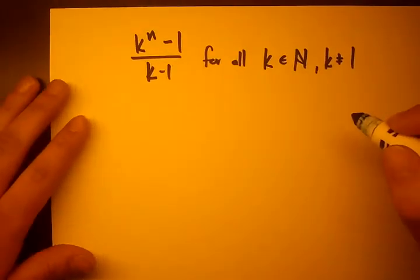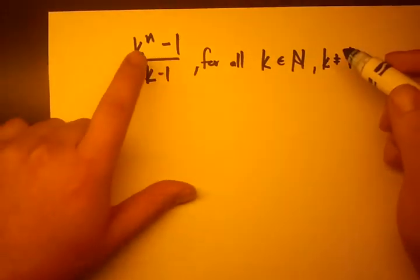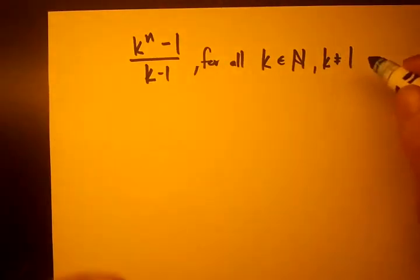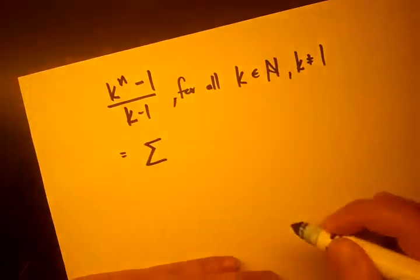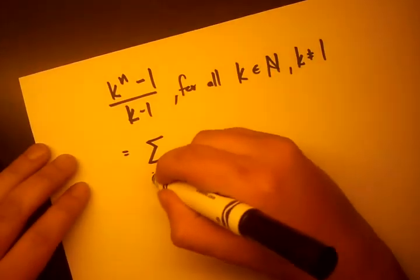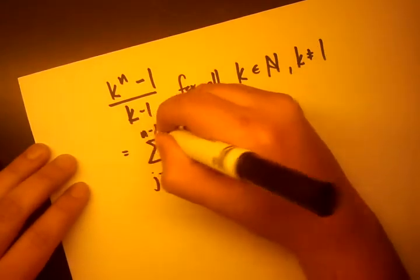and k can't equal 1, because then the denominator is 0. Now, for all k that meet those conditions, k to the n minus 1 over k minus 1 is equivalent to the sum of writing from j equals 0, k to the j, n minus 1.